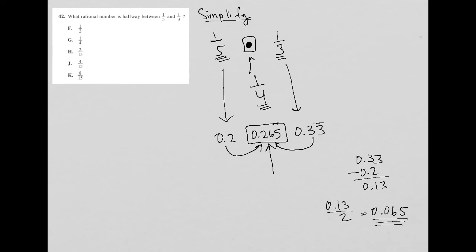So now I go up to my answer choices and just see, which one of these answer choices is equivalent to 0.265 or very close to it.